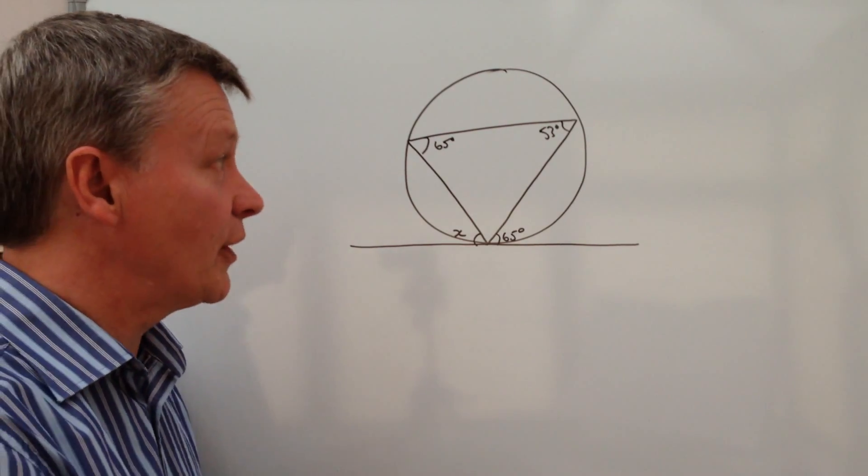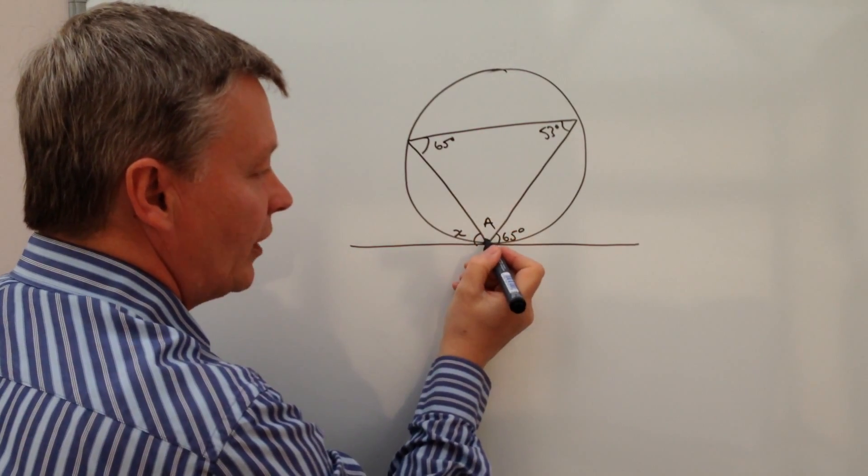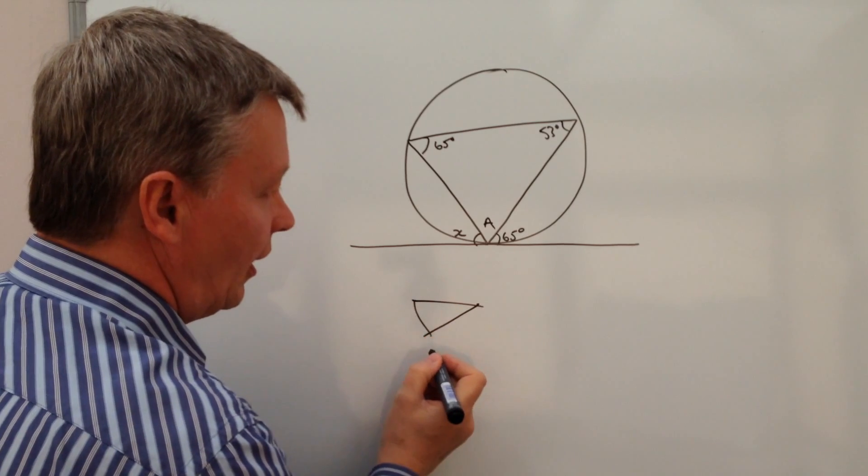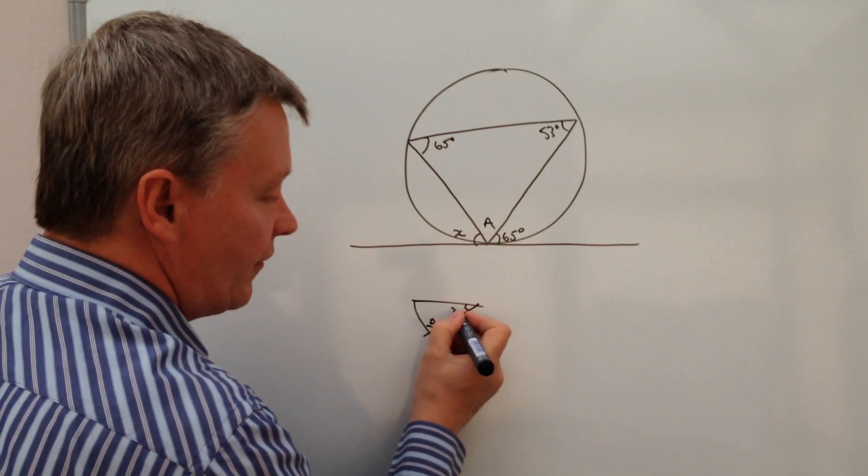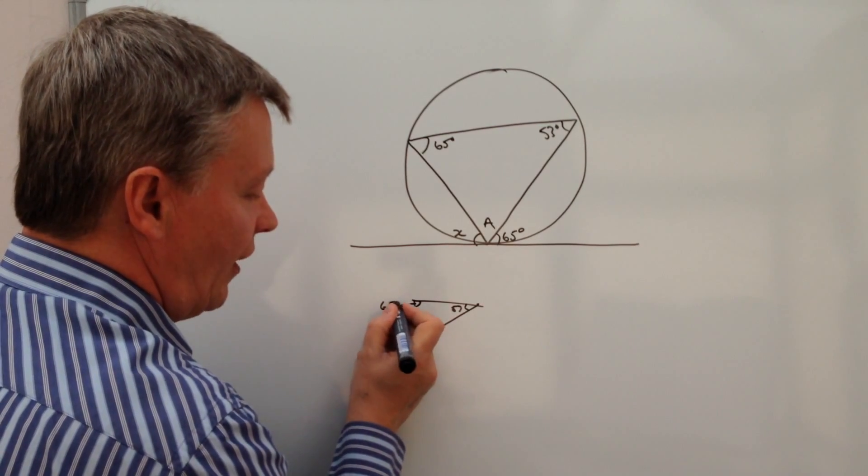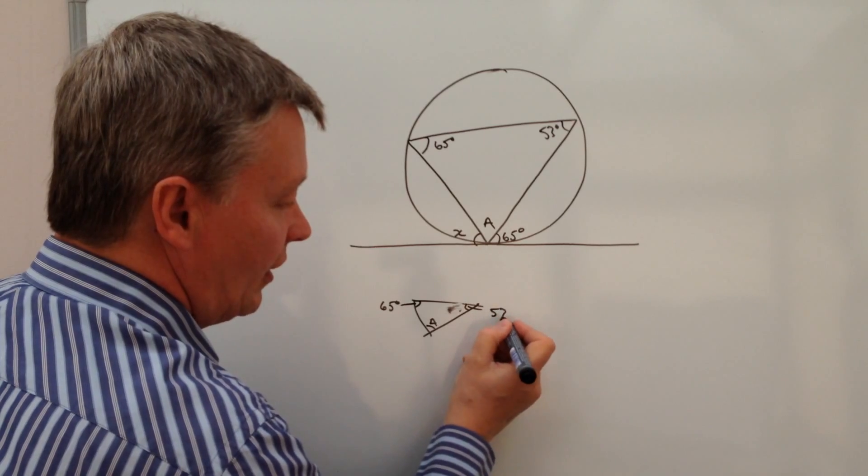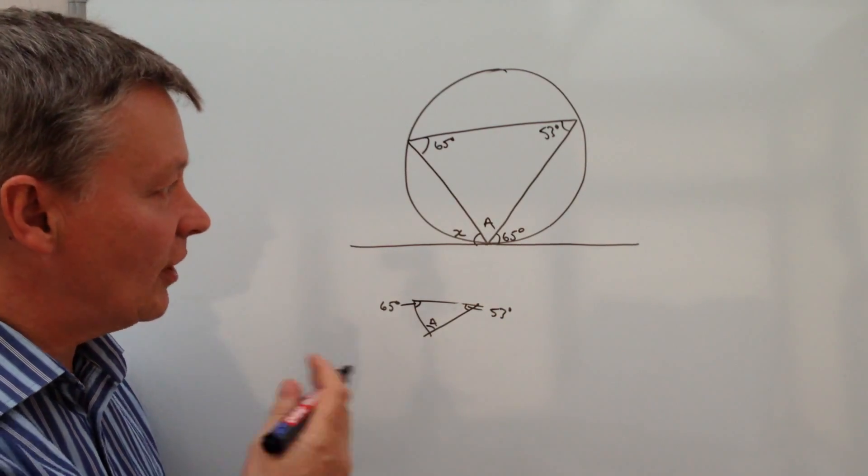So let's have a go at that. I'm going to find out now—we'll call it angle a, this one in the middle here. So what we've got is a triangle like that. This is a, and at the moment we know this is 53 degrees and we know this is 65 degrees. I hope that's come across all right on the board.